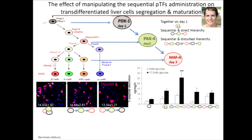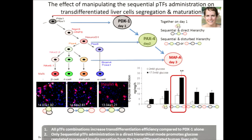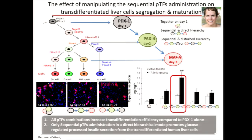When we looked at maturation along the beta cell lineage, only when the three transcription factors were supplied sequentially, one day apart in a direct hierarchy, did we see the only situation that allowed maturation toward beta cells — meaning increased processing evidenced by C-peptide secretion and glucose-regulated C-peptide secretion. The conclusion is that three transcription factors are much better than one, but only sequential delivery in a direct hierarchical manner promotes beta cell maturation.